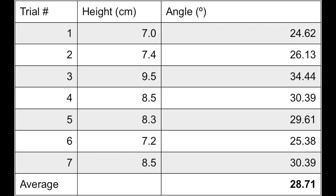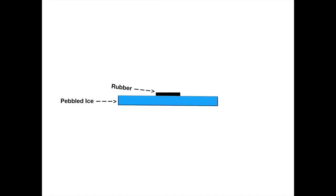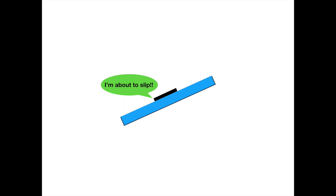We carried out this experiment 7 times and calculated the average angle. To understand the importance of observing the average angle at which the material begins to slide, let's take a look back at an animated version of the experiment. Here is a piece of rubber on a tray of pebbled ice. We tilted the tray until the instant before the shoe began to move.